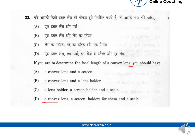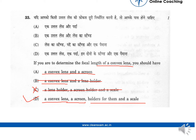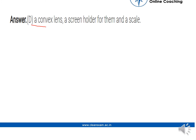This one is already gone. Now, what else do you need? We need a screen — we have a screen here, but this one doesn't have a screen. We also need holders to scale them. So this one has all the necessities we need. This is the correct solution.